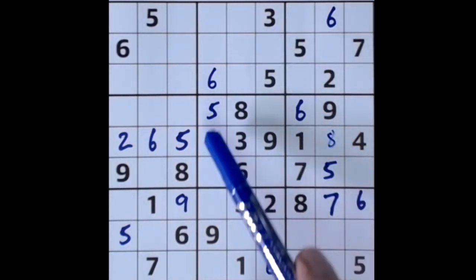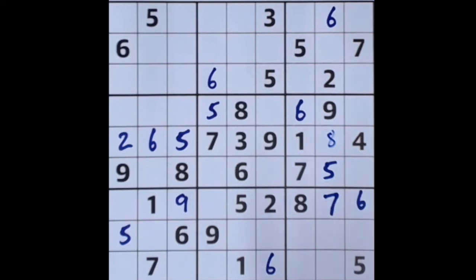Now also, 7 blocks this square, this 7 blocks these two squares, so that's the only square in that column where a 7 can go.